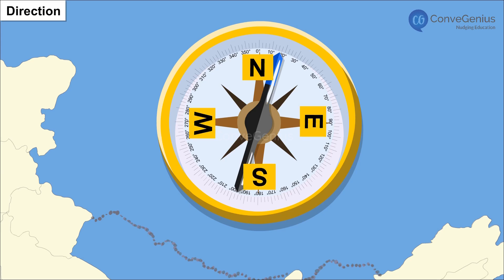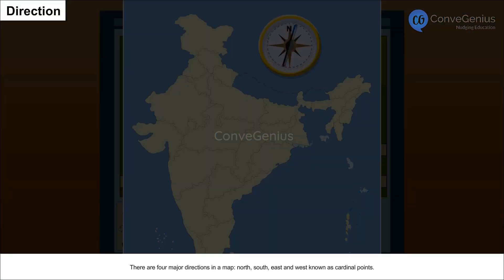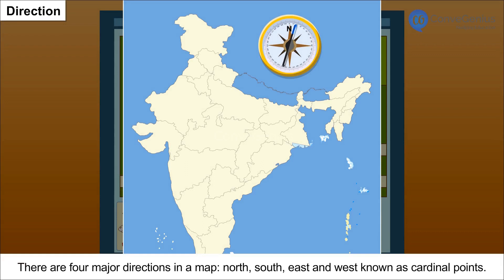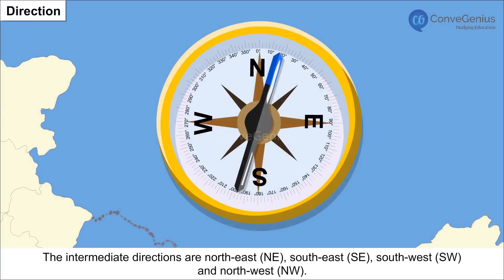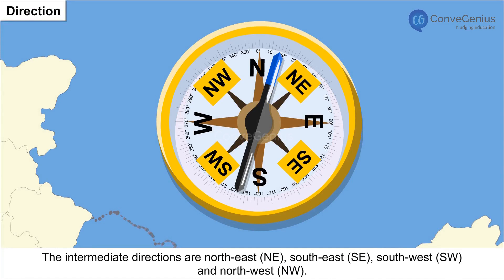west and south. There are four major directions in a map — north, south, east and west — known as cardinal points. The intermediate directions are northeast, southeast, southwest and northwest.